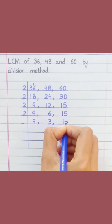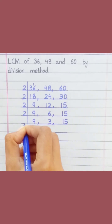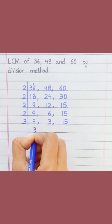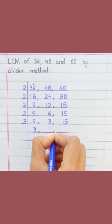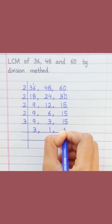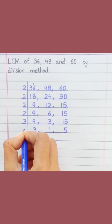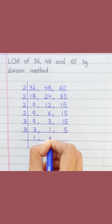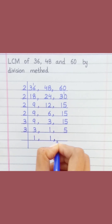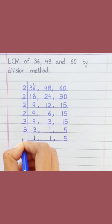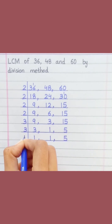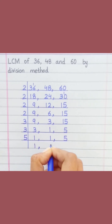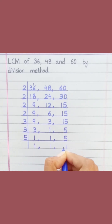Dividing by 3: 3 threes are 9, 3 ones are 3, 3 fives are 15, 3 ones are 3. Dividing by 5: 5 ones are 5.